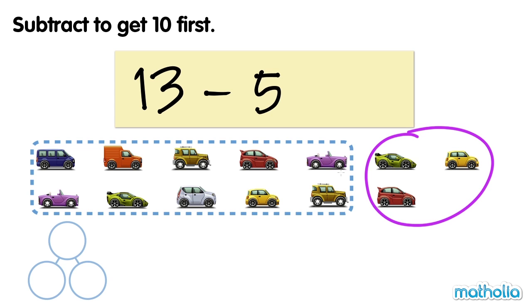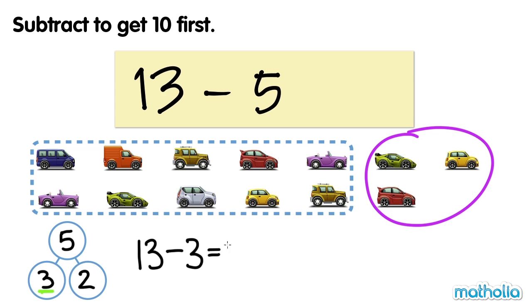We can write 5 as a number bond of 3 and 2. So first, we subtract 3 to get 10. 13 minus 3 equals 10.